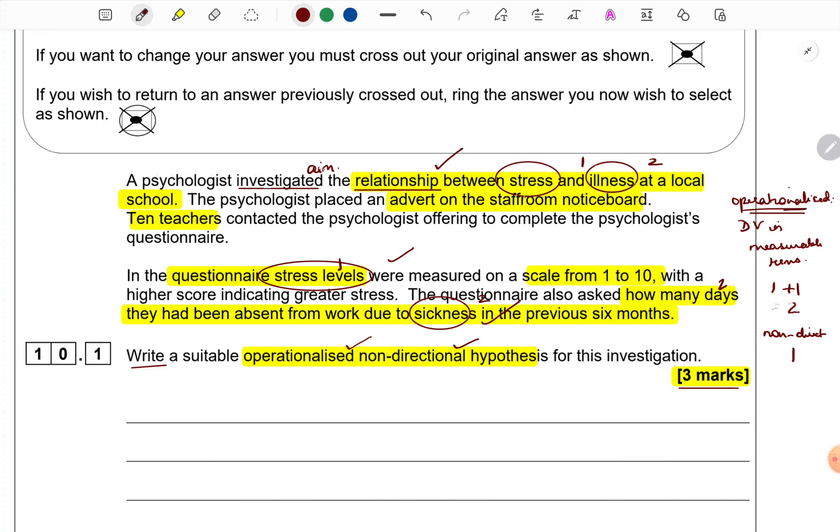Also, because it has to be measurable, we have to give how it has been measured or the terms of measurement as well. So, stress levels has been measured in terms of a scale and sickness has been measured in terms of number of days of absence.